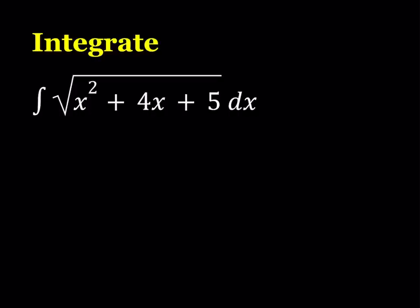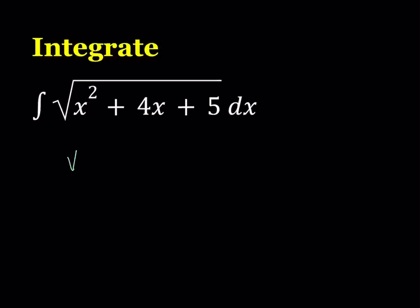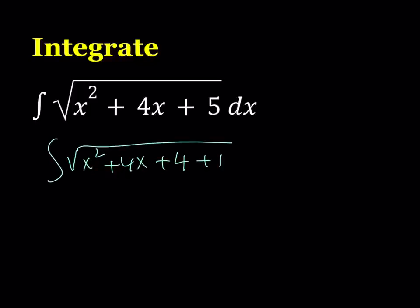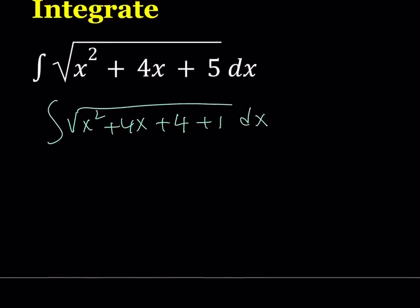We can rewrite the expression under the radical as x squared plus 4x plus 4 — which is (x+2) squared — plus 1. My goal is to separate the perfect square, so this is equivalent to the integral of the square root of (x+2) squared plus 1 dx.